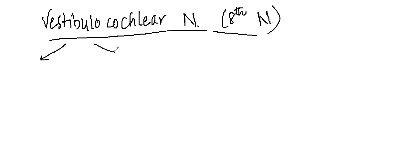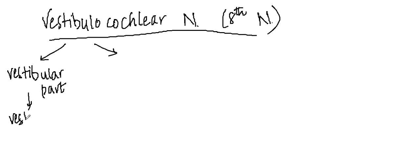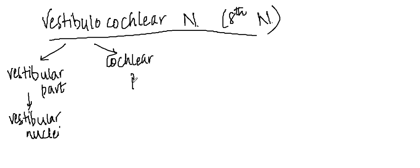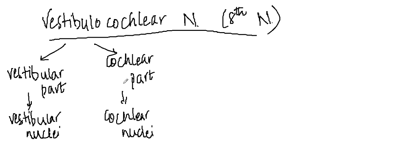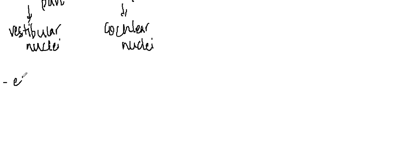The vestibulocochlear nerve has two components. One is the vestibular part, which arises from the vestibular nuclei. The second part is called the cochlear part, and this cochlear part arises from the cochlear nuclei. The vestibular part is concerned with equilibrium, whereas the cochlear part is concerned with hearing.